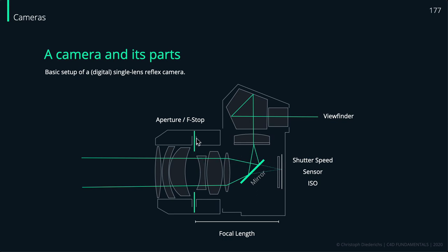The aperture or f-stop can be changed — it can be made bigger or smaller. We can also change the shutter speed, which defines how long the light travels to the sensor at the back. Then we have something called focal length, which is the distance from your aperture to your sensor. If you have a fixed focal length lens, you cannot change it — it's defined by the lens of your camera.